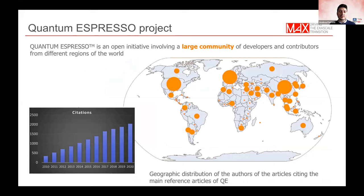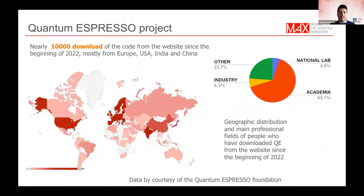The Quantum Espresso project involves a large community of developers, contributors, and users from all around the world. Here is a map of the geographical distribution of citing papers, and you'll see it is quite widespread, which also reflects the geographical distribution of attendees to this workshop. Another geographical map concerns downloads — of the order of 10,000 downloads per release — with Quantum Espresso mostly downloaded in Europe, the US, India, and China.